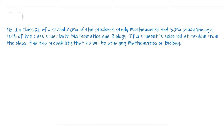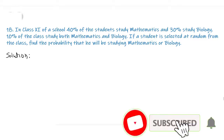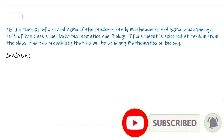Question number 18. In Class 11th of a school, 40% of the students study mathematics and 30% study biology. 10% of the class study both mathematics and biology. If a student is selected at random from the class, find the probability that he will be studying mathematics or biology.